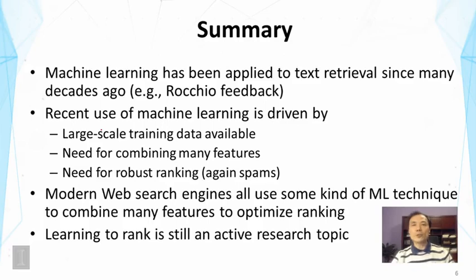Secondly, it's also driven by the need for combining many features — not only because there are more features available on the web that can be naturally used to improve scoring, but also because by combining them we can improve the robustness of ranking, which is desired for combating spam. Modern search engines all use some kind of machine learning techniques to combine many features to optimize ranking, and this is a major feature of commercial engines such as Google or Bing.